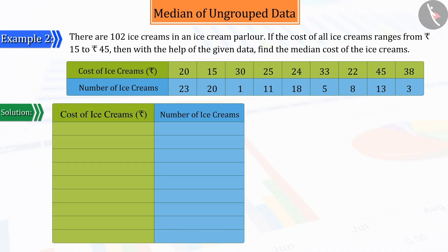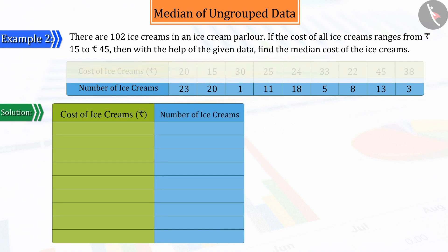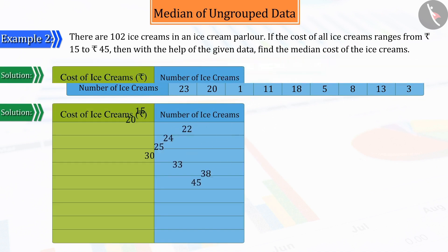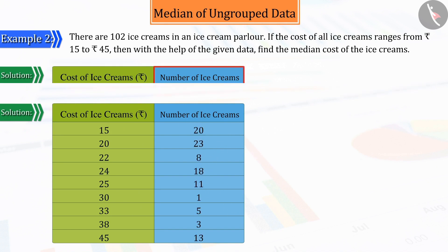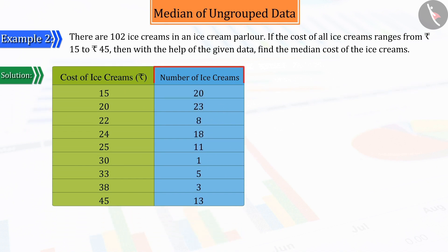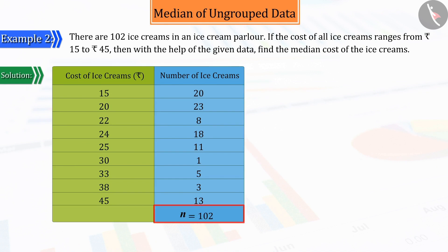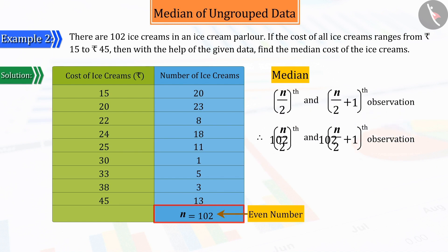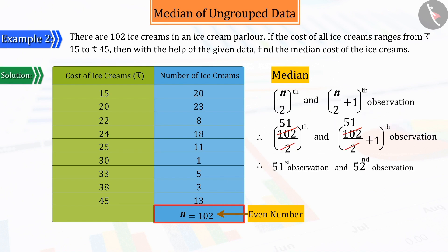We know that for median, we first need to arrange the data in ascending order and display it in the following way. Given that the number of ice creams, n, is 102, which is an even number, we can tell that the median will be the average of the 51st and 52nd observations.